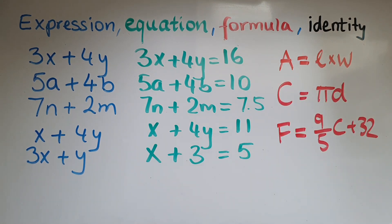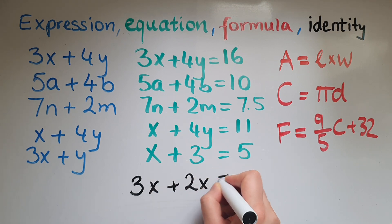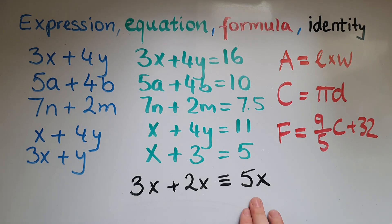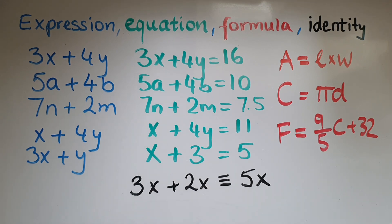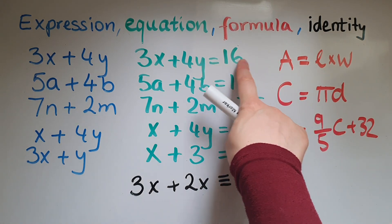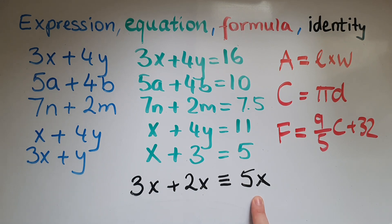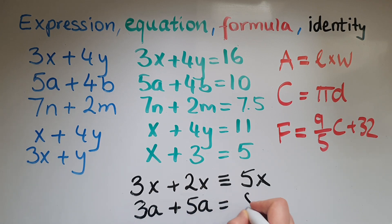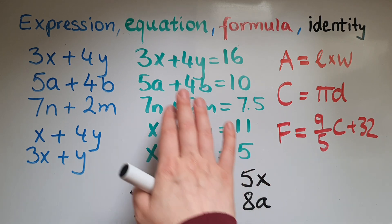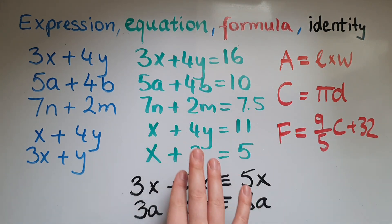What about identity? An identity looks like this: 3x plus 2x is identical to 5x. 5x is not a value — it just means exactly the same thing as 3x plus 2x. You're not working out something like in an equation where you have a total of 16. It just means these are identical. So if you have 3 apples and you're given another 5 apples, you have 8 apples — that's an identity. Whatever value you put for x or a, it's not going to change what you have on the other side, whereas in an equation you could have different values for the variable.